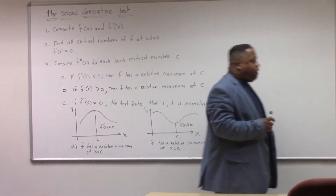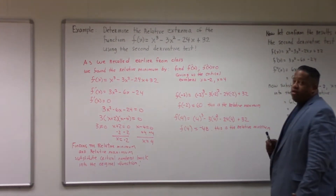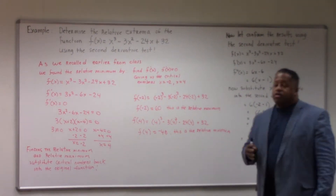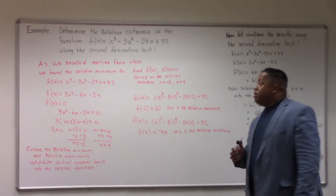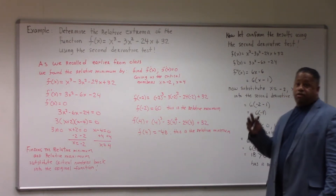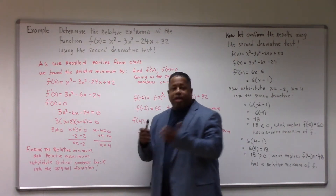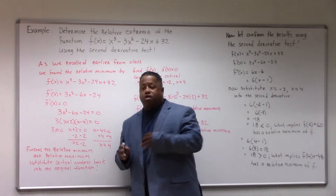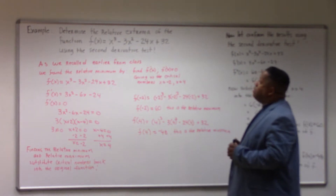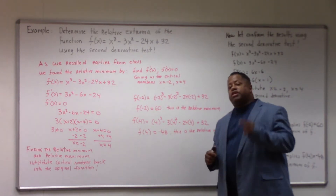Let's look at an example problem. We're going to first calculate the relative extrema, and then confirm that the relative extrema exist based on the second derivative test. Determine the relative extremum — which is essentially the relative minimum and relative maximum of the function f of x equals x cubed minus 3x squared minus 24x plus 32 — using the second derivative test.